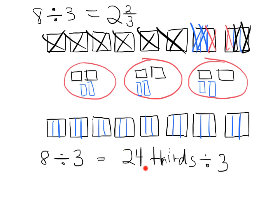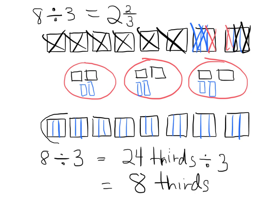So now we have 24 thirds divided by 3. What's 24 divided by 3? It's 8. So 24 thirds divided by 3 equals 8 thirds. Now, if you think about what 8 thirds is — counting 1 through 8 — each person gets 8 thirds. And that's 2 wholes plus 2 thirds, 2 wholes plus 2 thirds.